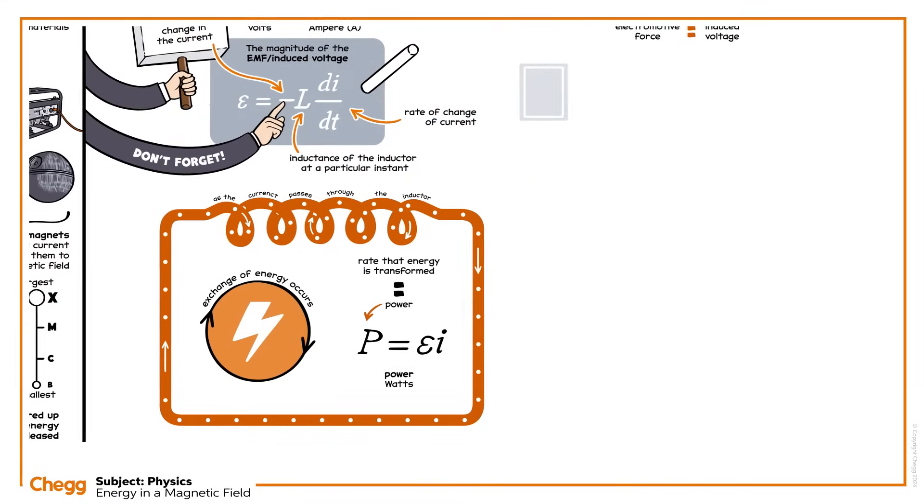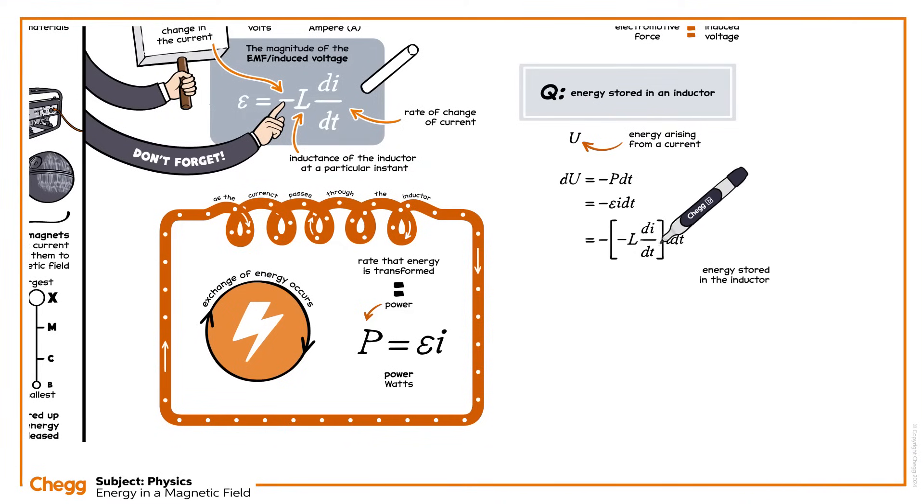Finally, let's derive the equation for energy stored in an inductor. The energy arising from a current at any given time is given as U. At any given time, dU equals negative power times dt. Swapping in the equation for power and simplifying, we see that the energy stored in the inductor is given by dU equals LIdI.